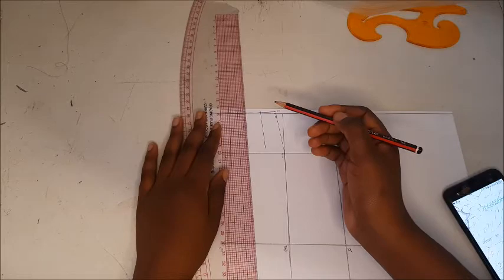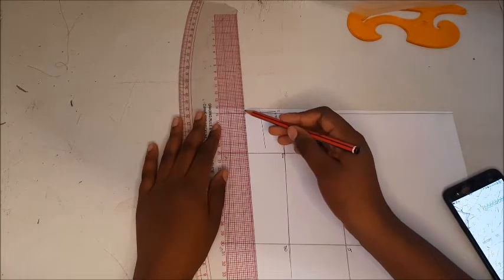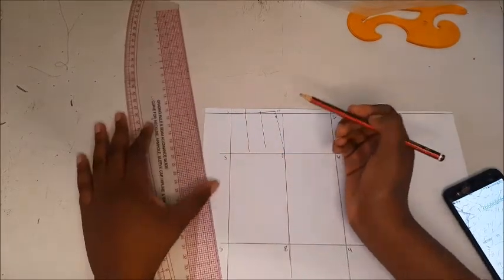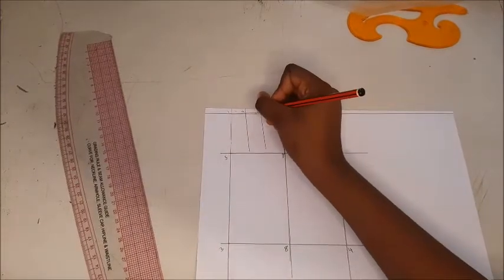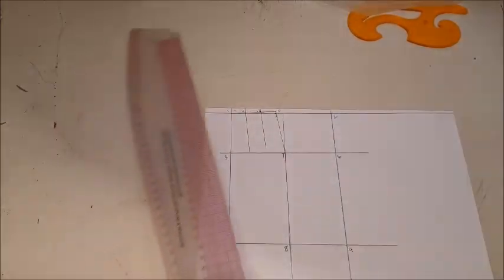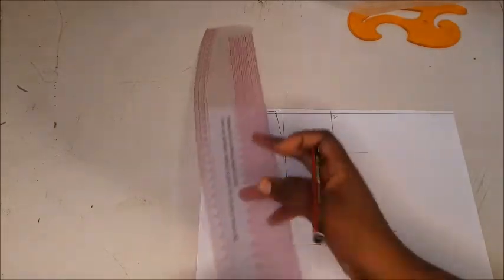And mark each of those points as possible. Point number 11 and point number 12, point number 11 being the one closer to the center back. And now from point 11, you're going to measure 14 centimeters downwards.